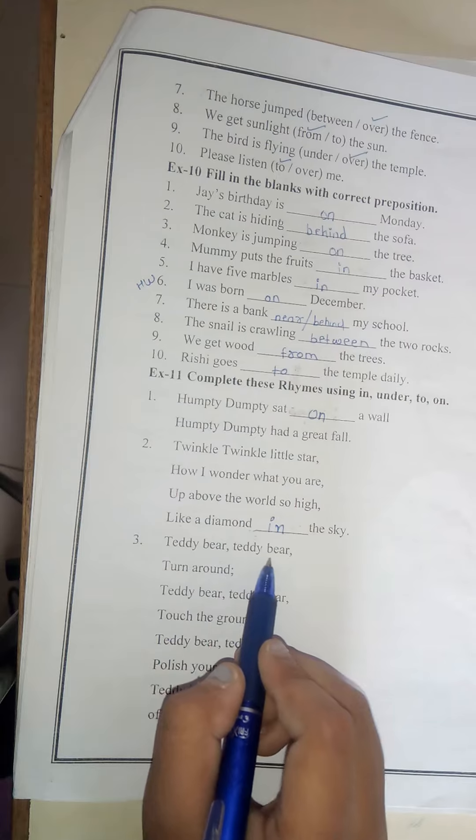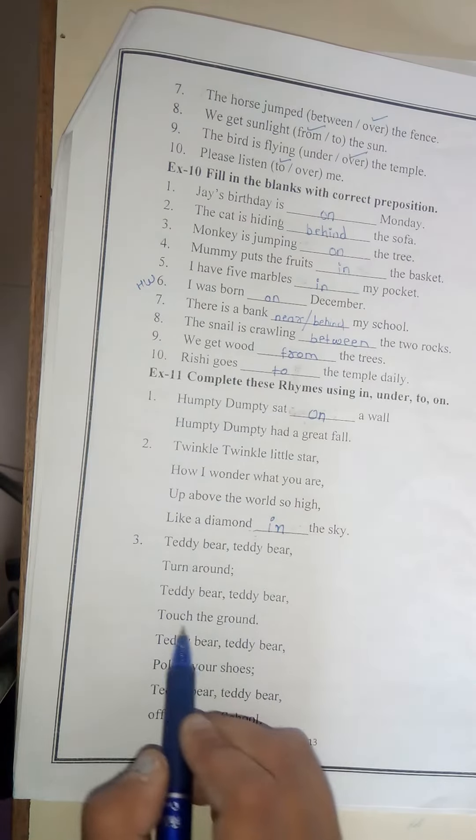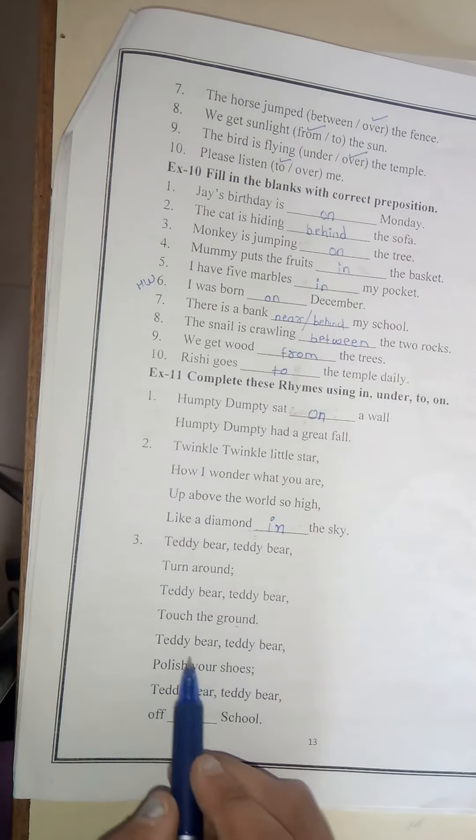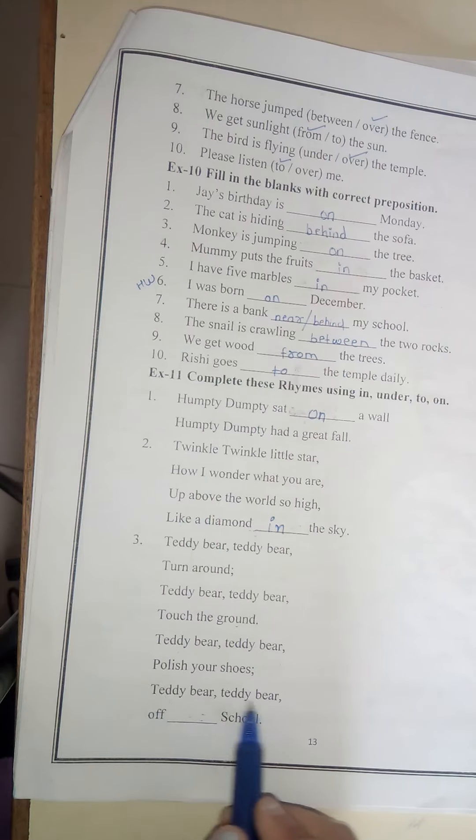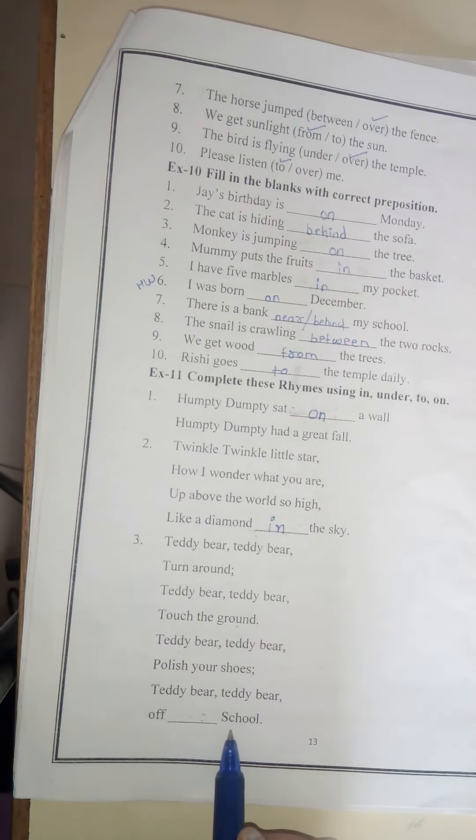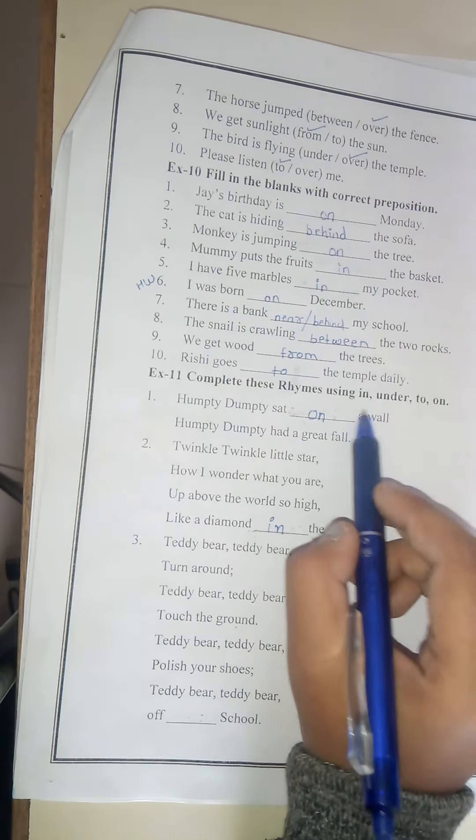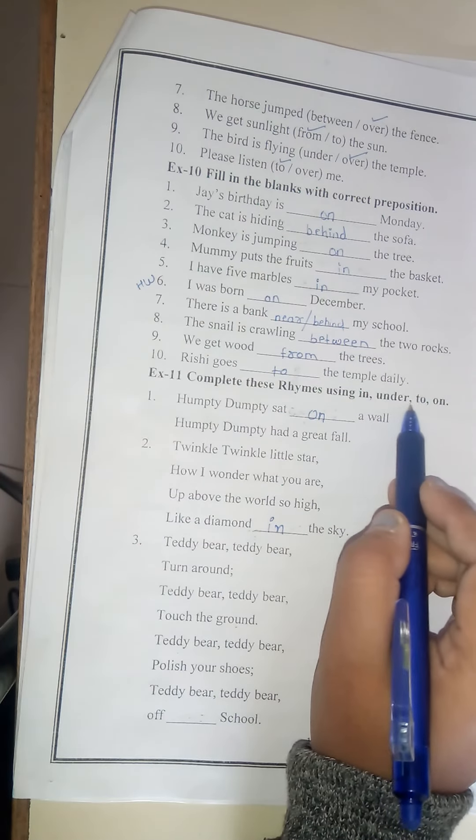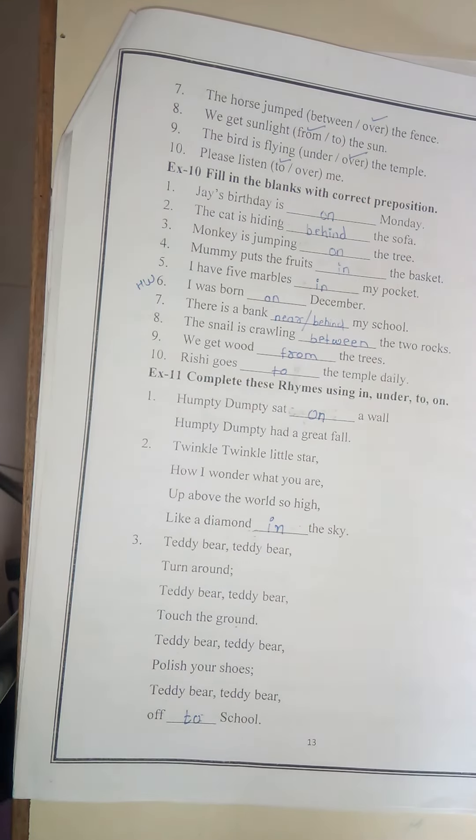Teddy bear, teddy bear, turn around. Teddy bear, teddy bear, touch the ground. Teddy bear, teddy bear, polish your shoes. Teddy bear, teddy bear, off blank school. Here school is written. It is a place. So which preposition will come, in, under, to, or on? To school.